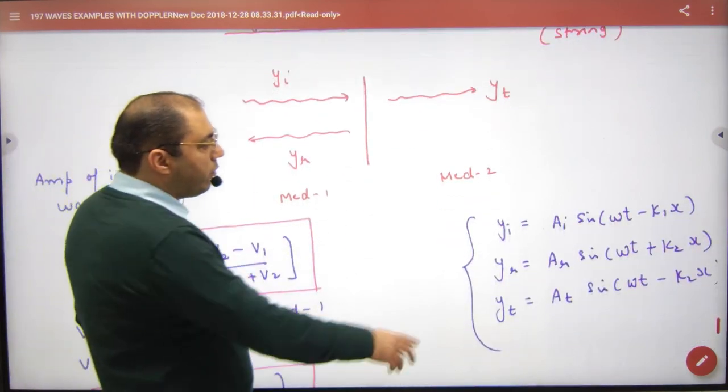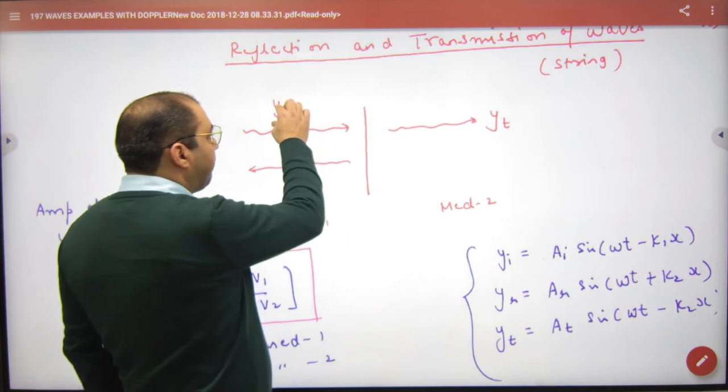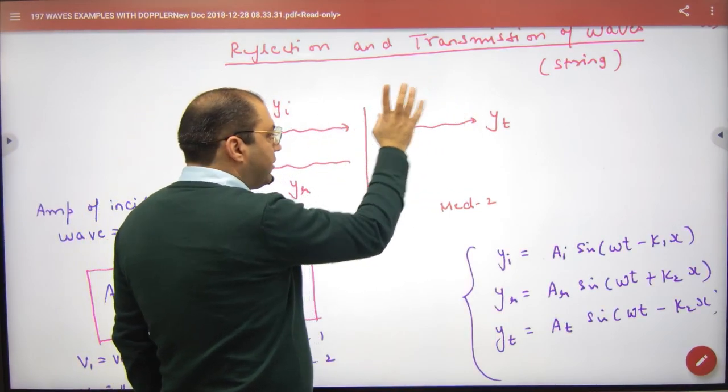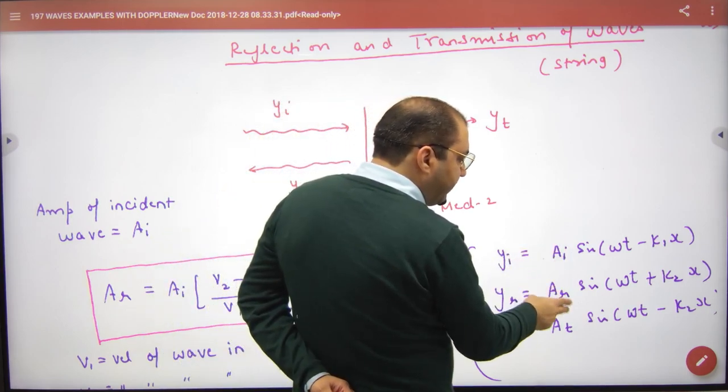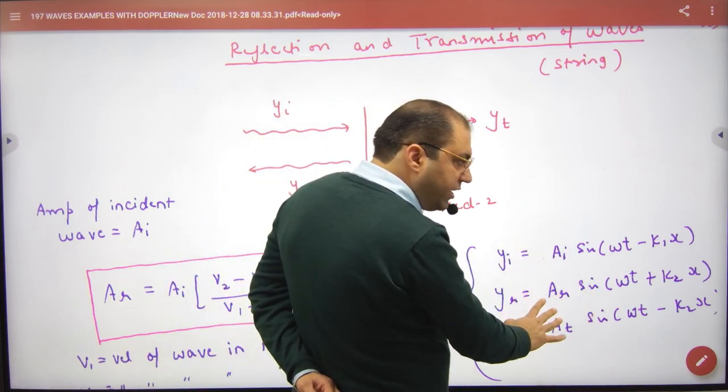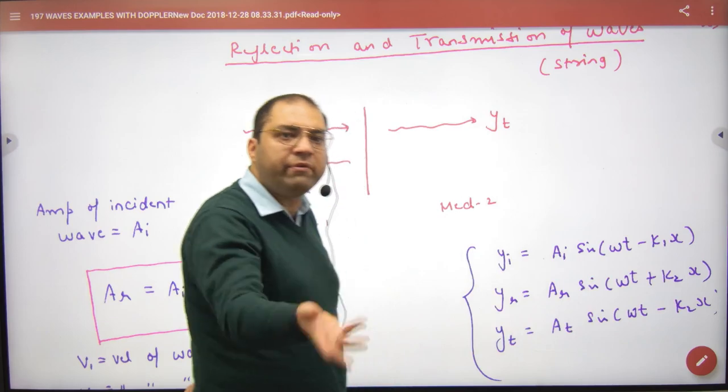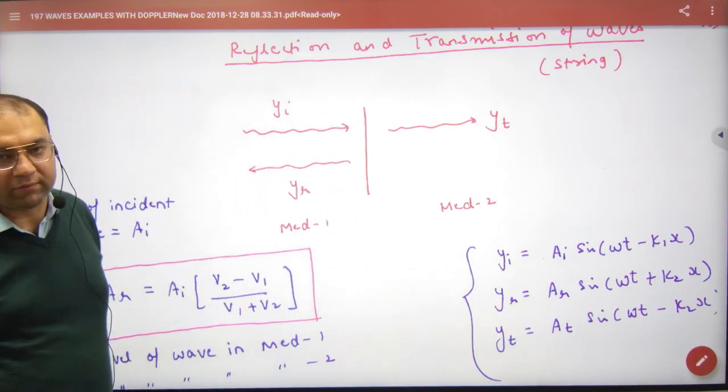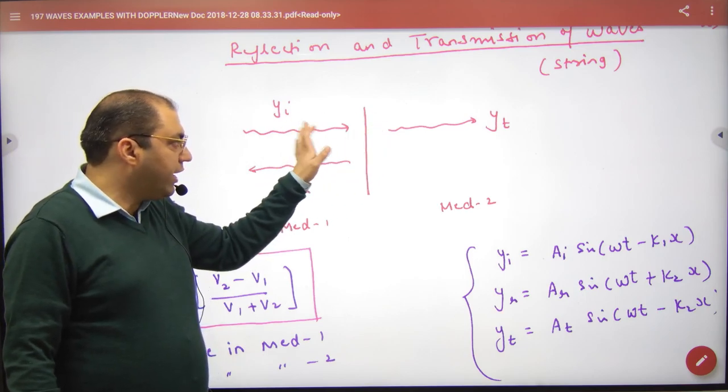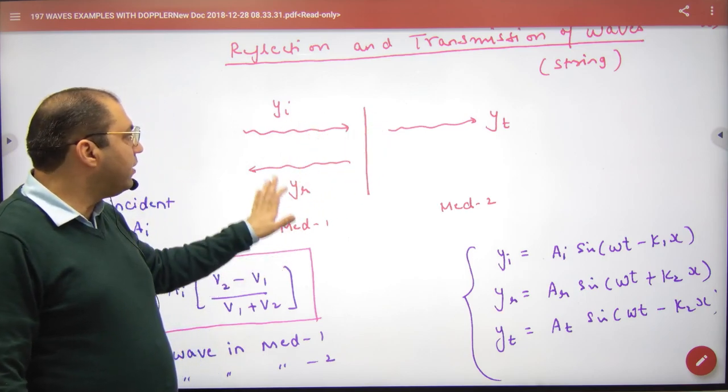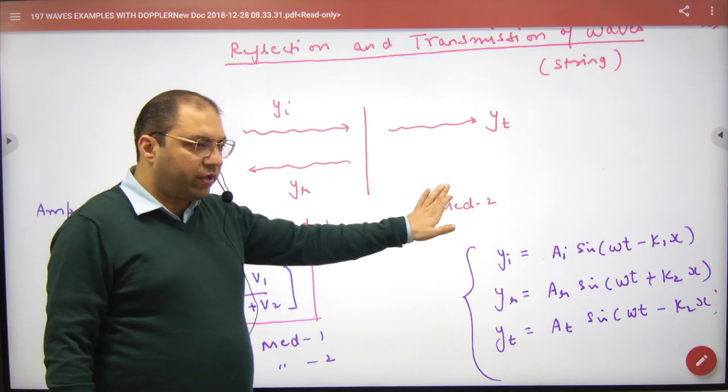So their equations are AI, amplitude of incident; AT, amplitude of transmitted; AR, amplitude of reflected. The amplitudes are different. K is different because speed in the medium is different. K is dependent on speed. So amplitude AI has speed v1, speed v2.